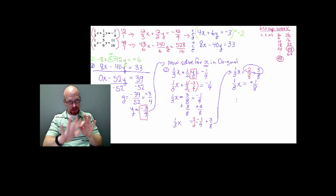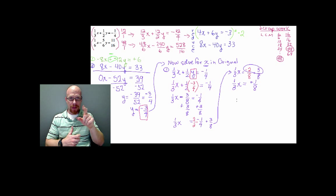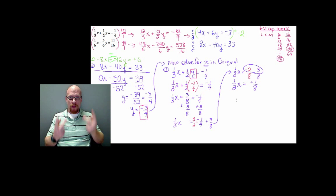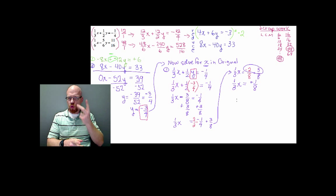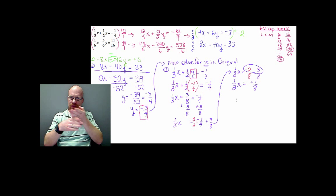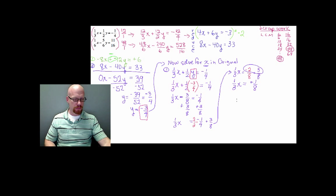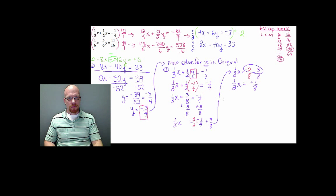Now I have one-third x equals one-eighth. We still have fractions, but it's not a problem. We'll divide each side by one-third. Watch what happens when you divide fractions by fractions.